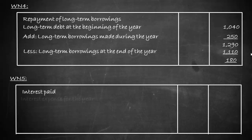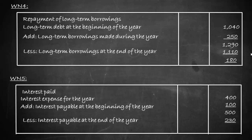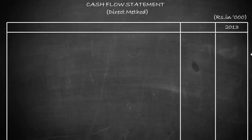Working Note 5 is for computing interest paid. Interest expense for the year is 400. Adding opening interest payable of 100 gives 500. Deducting closing interest payable of 230 gives interest paid of 270.